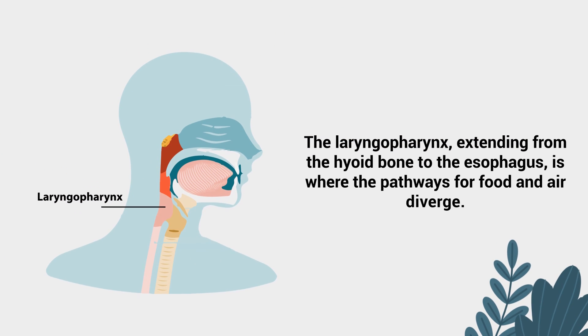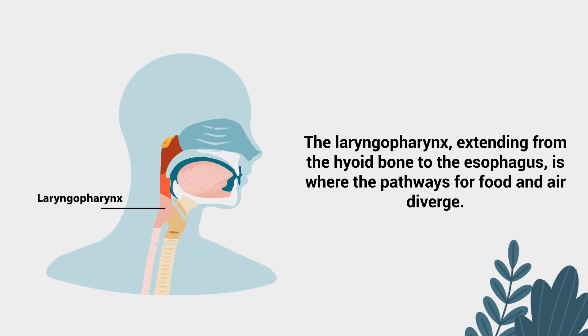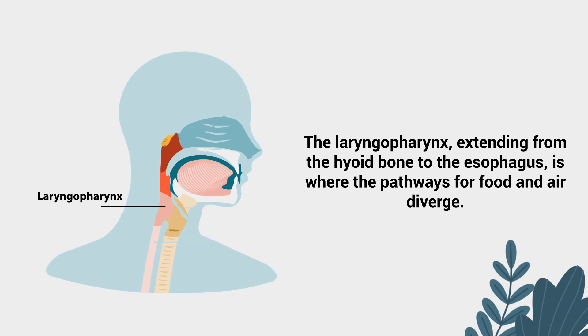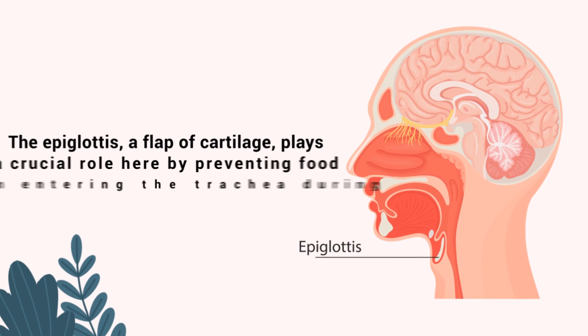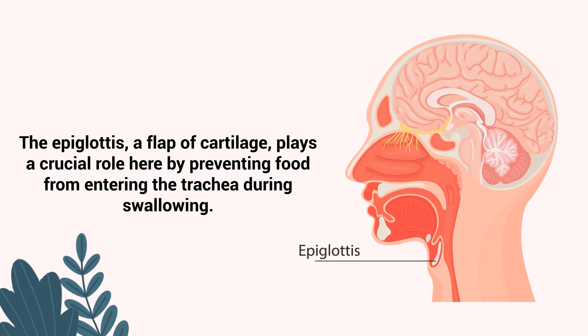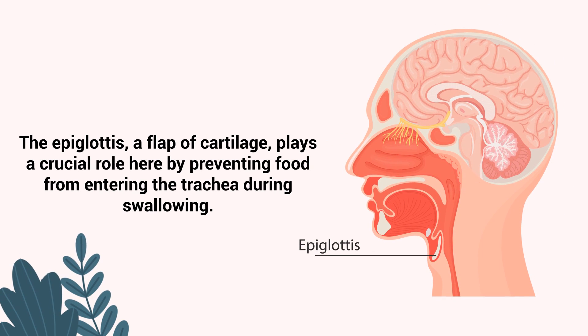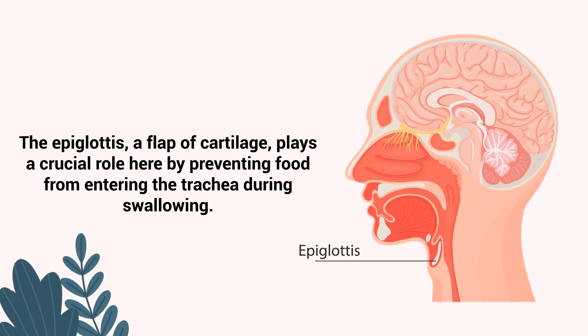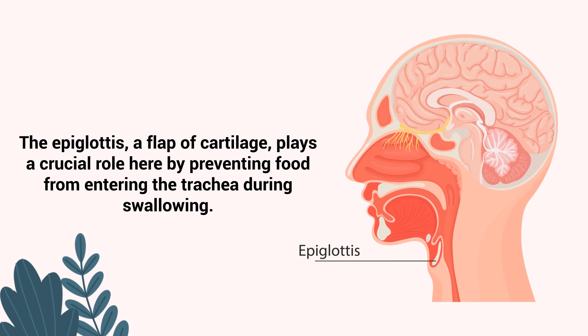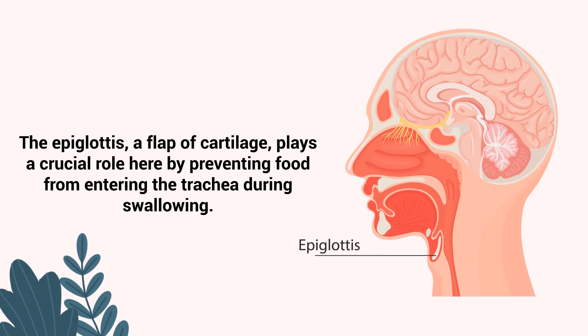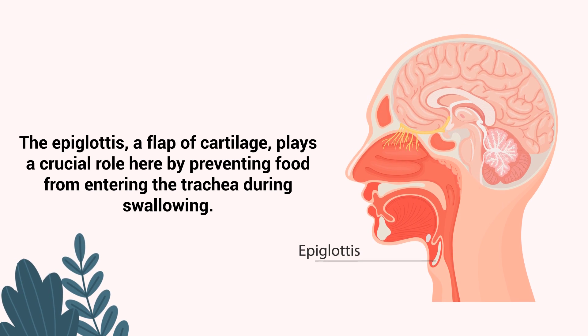The laryngopharynx, extending from the hyoid bone to the esophagus, is where the pathways for food and air diverge. The epiglottis, a flap of cartilage, plays a crucial role here by preventing food from entering the trachea during swallowing.